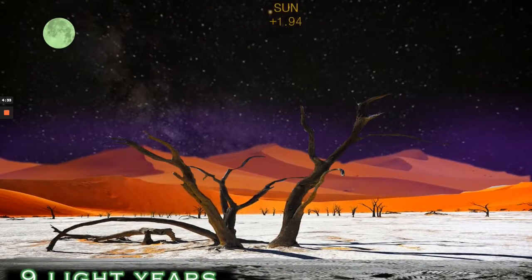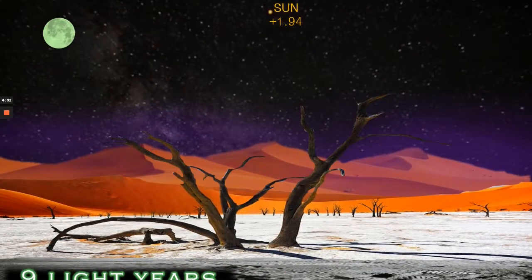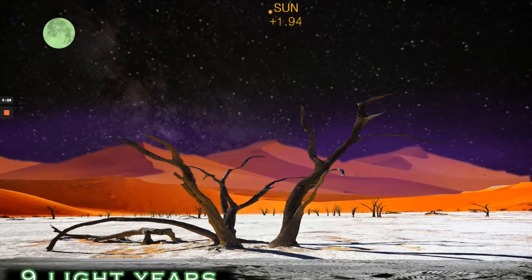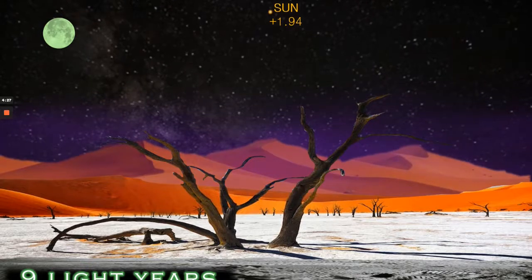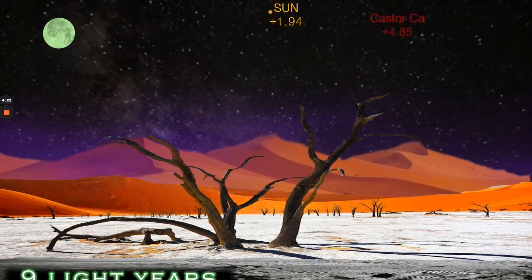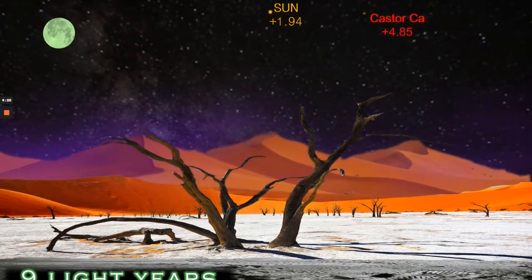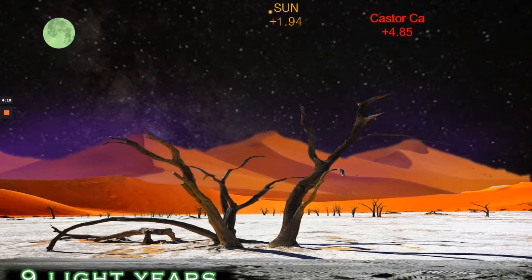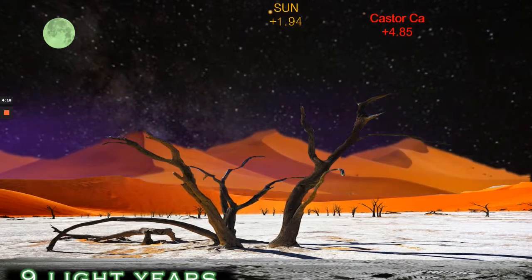Here we see depicted a strange desert light world with huge dunes in the distance. We see the sun at 9 light years would be plus 9 at power of magnitude so a bright star but nowhere near as the brightest in the sky. Castor CA star at just plus 4.85 magnitudes now is barely visible you can just about make it out there as a little red dot.